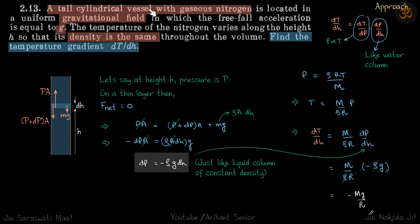A tall cylindrical vessel with nitrogen is located in gravity G. The density is constant everywhere. We need to find the temperature gradient dT by dH.